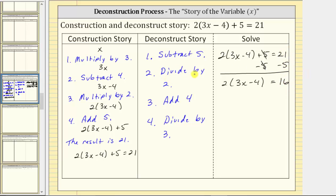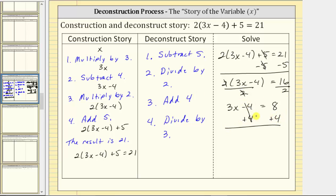Step two: we divide both sides of the equation by two. On the left, two divided by two simplifies to one, so the left side simplifies to three x minus four. On the right, sixteen divided by two equals eight. Step three is to add four to both sides of the equation. Simplifying, minus four plus four equals zero, so the left side simplifies to three x. Three x equals eight plus four, which is twelve.